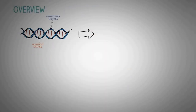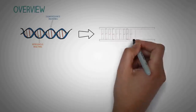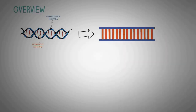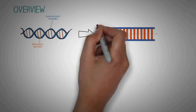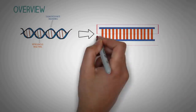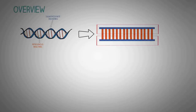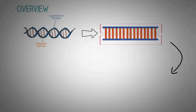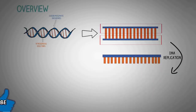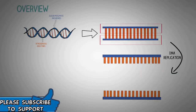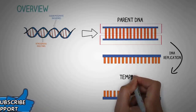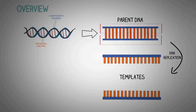If we untwist this double helix model we get the stepladder model of the DNA, which is a simple depiction of its structure. In this model, the DNA consists of two strands running parallel to each other. In DNA replication, these two strands separate — the original DNA is called the parent DNA, and these two separated strands act as templates upon which new strands are copied and formed.